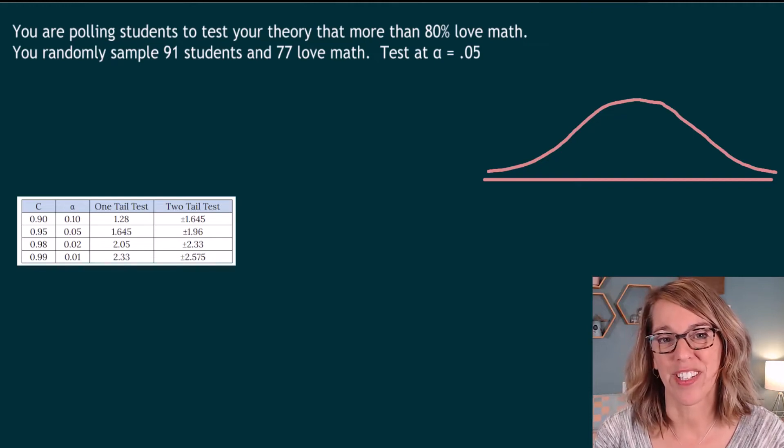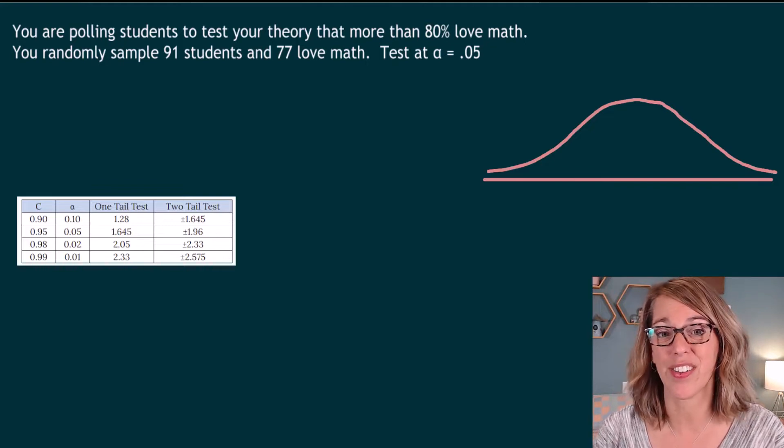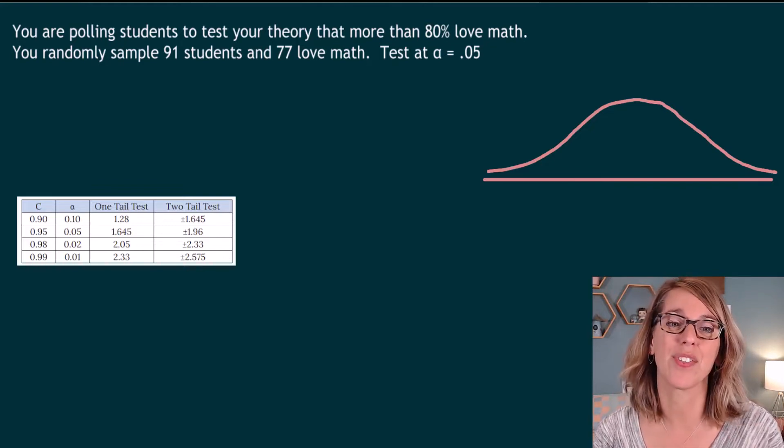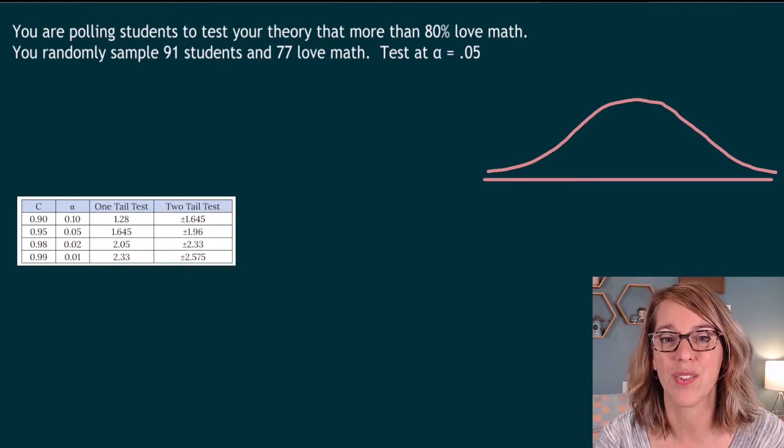Let's run a one-sample proportion test. In this particular problem, we are polling students to test our theory that more than 80% of students love math. We have surveyed 91 students, and we found that 77 do love math.